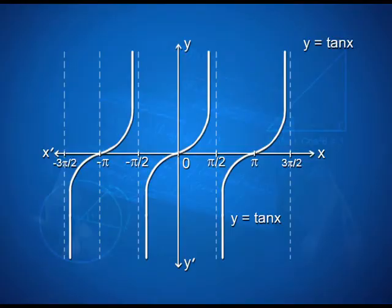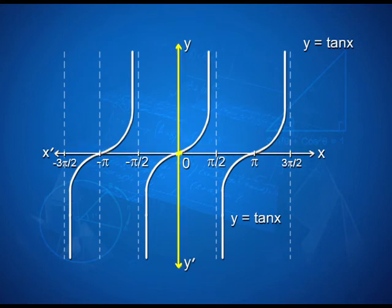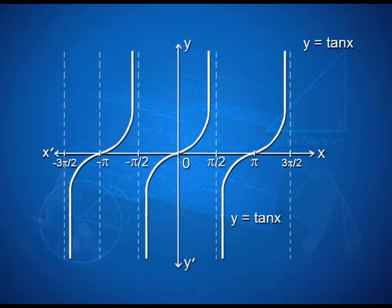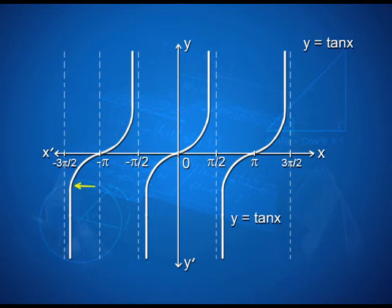The x-axis is x'Ox and the y-axis is yOy'. We can see the graph is increasing from 0 to pi by 2 but not touching the line x = pi by 2. Between −pi by 2 and pi by 2, the graph is increasing and approaches pi by 2 without touching it. Similarly, it decreases along the line for −3 pi by 2, again not touching the asymptote.